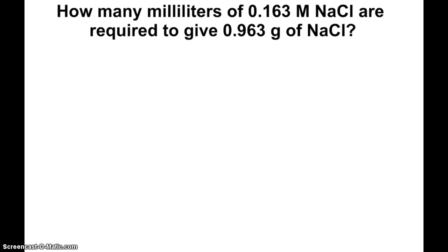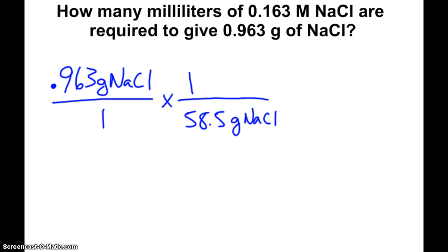Here's another example of a question we could do using molarity. How many milliliters of 0.163 molar sodium chloride are required to give 0.963 grams of sodium chloride? This is a very common question. If you take a certain amount of solution, you can figure out how much solute is in that that you pull, because you use concentration. Stoichiometry, I'm sorry, dimensional analysis can certainly be used here. If I'm looking to find 0.963 grams of sodium chloride, of course, I want to find milliliters. The link between mass and milliliters is molarity, but I first got to go to moles.